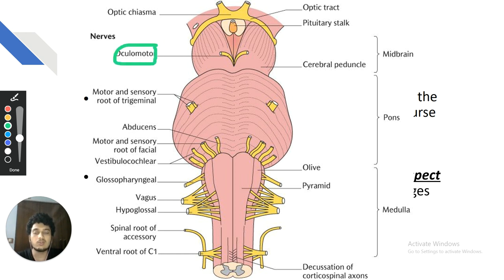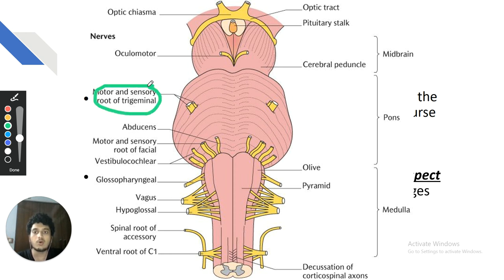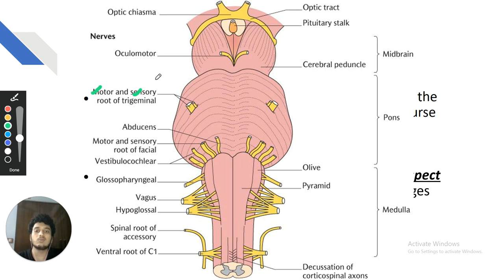The oculomotor nerve arises from the ventral aspect of the midbrain, and the trochlear nerve arises from the dorsal aspect of the midbrain. The trigeminal nerve arises from the pons at the junction with the superior cerebellar peduncle — it has a motor root and a sensory root. This is the pontomedullary junction where the 6th, 7th and 8th cranial nerves arise.